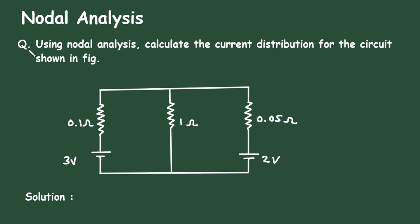Nodal Analysis Question: Using nodal analysis, calculate the current distribution for the circuit shown in the figure. In this circuit, we have to find the current through the 0.1 Ohm resistor, the 1 Ohm resistor, and the 0.05 Ohm resistor, using nodal analysis.